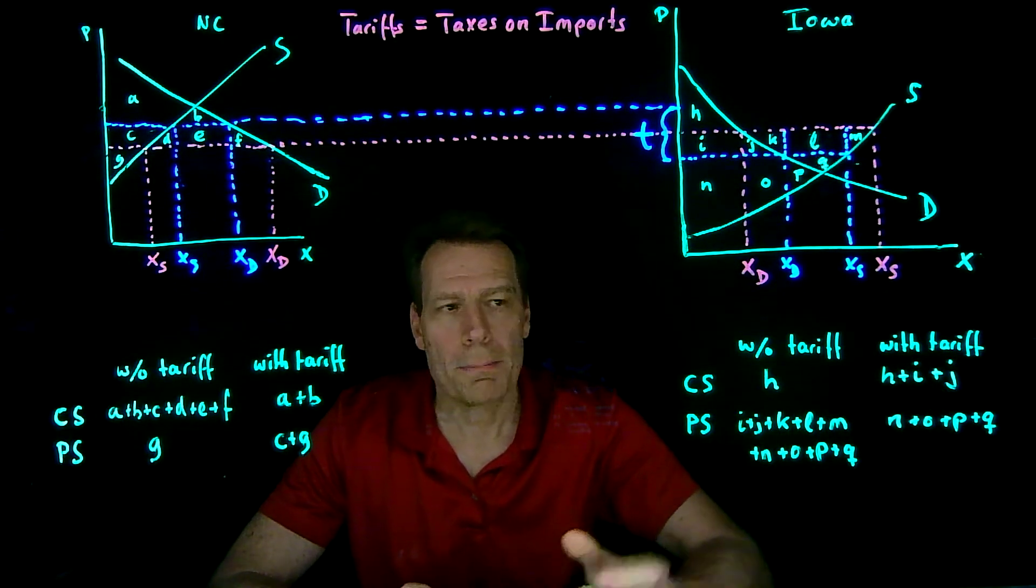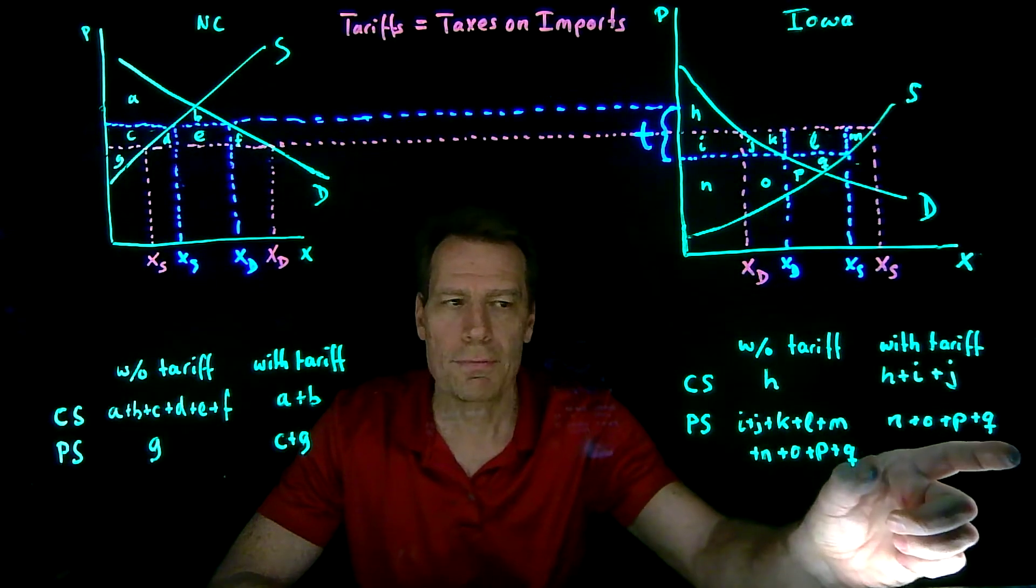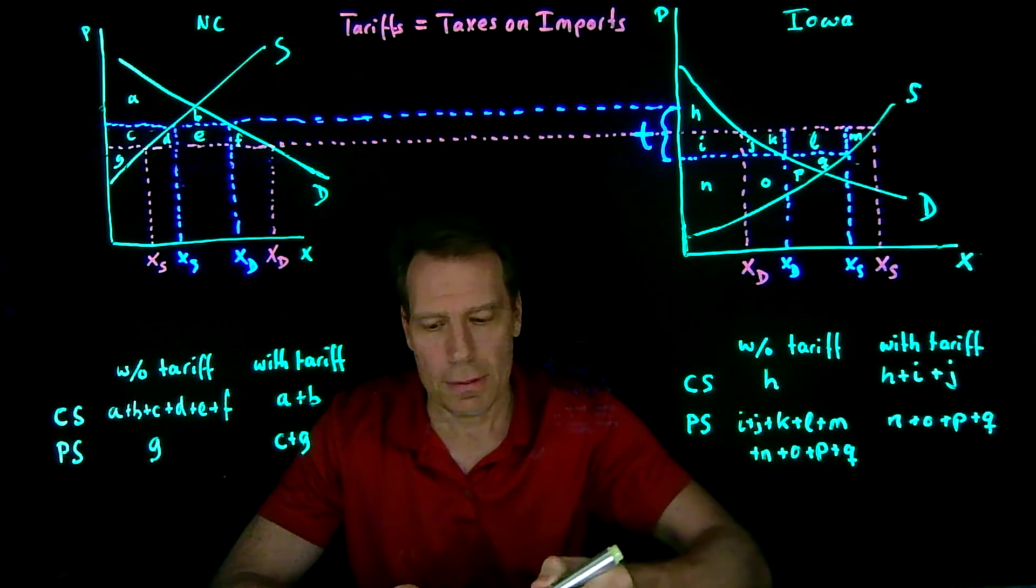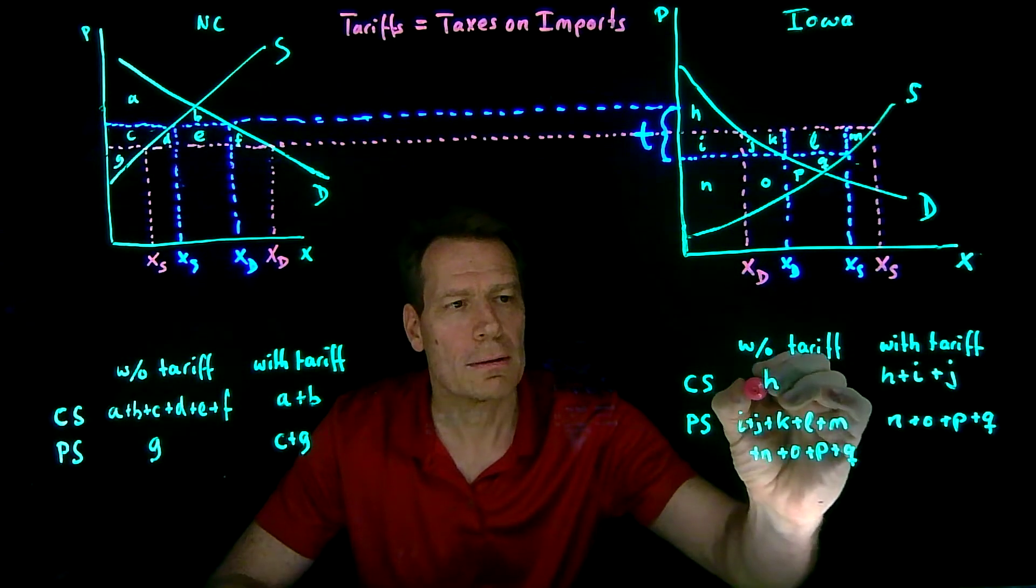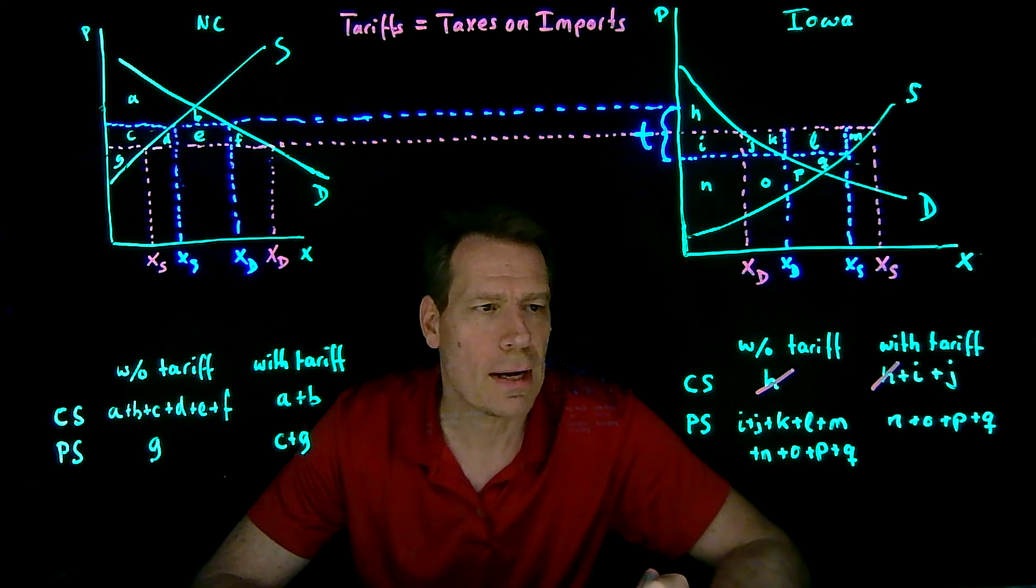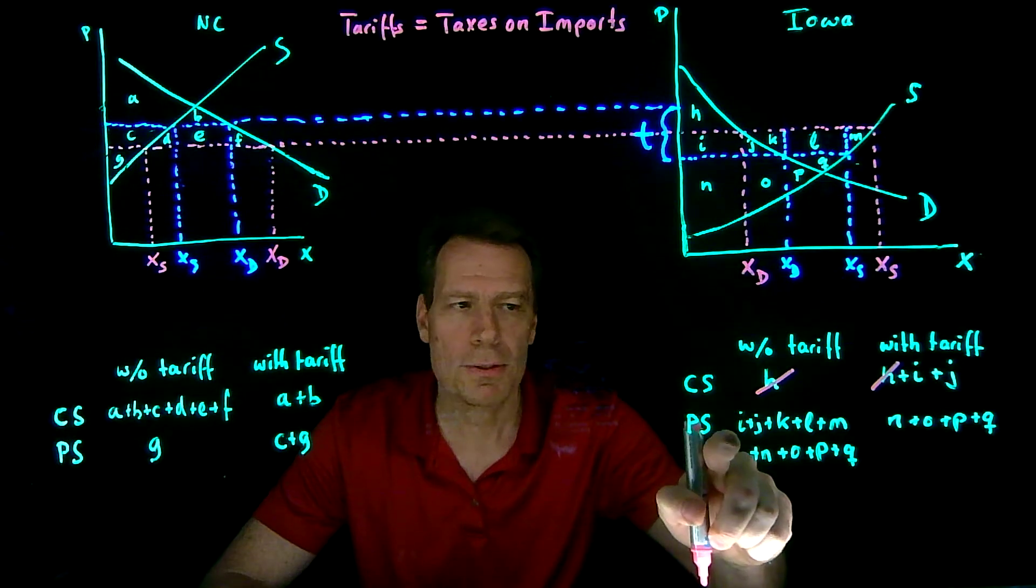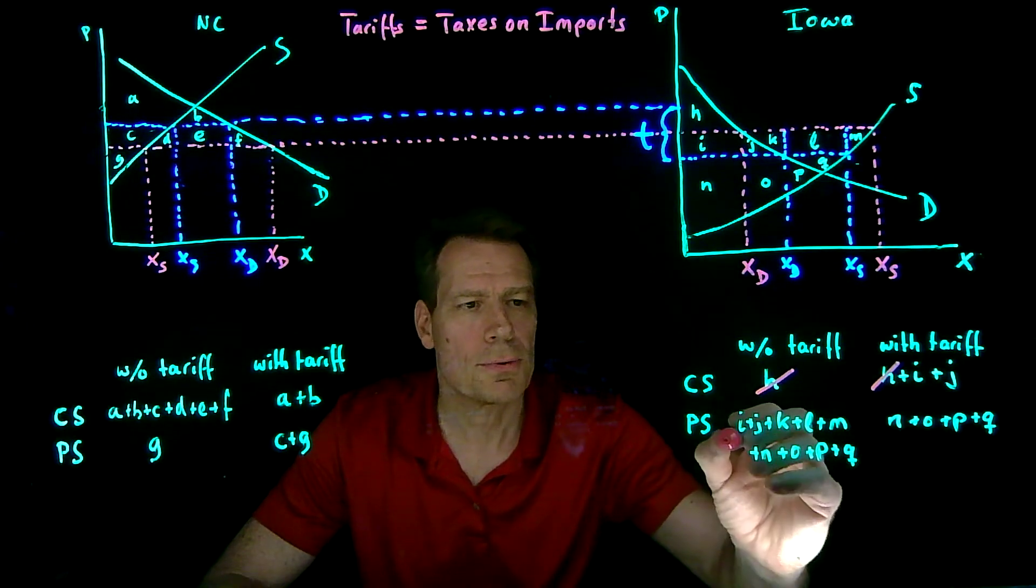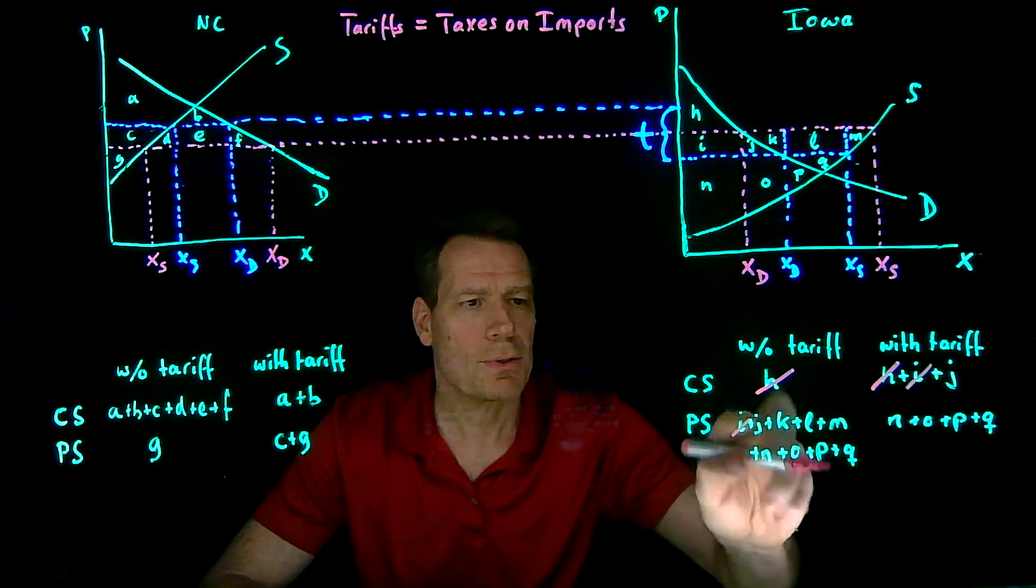Well, we can now compare the surplus that we got before to the surplus that we got after. The H happens both before and after, so we're not losing it. So we can just sort of cancel it out to keep track of things. The I happens in both cases, in one case on the producer side, in the other case on the consumer side, but it happens in both sides. The J happens on both sides.